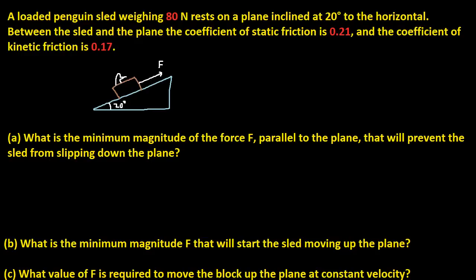Before we do that, let me draw a free body diagram like always. We have our little sled here, and we have a force that acts downward — this is going to equal mg cosine 20.